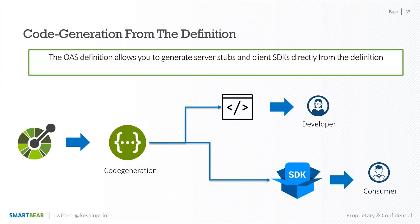And then we have the consumer. From your code generation, you can actually also generate SDKs. SDKs is a big problem — I've heard so many clients tell me how incredibly hard it is to build SDKs in so many different languages, client SDKs specifically, because there are so many different programming languages and everyone has different needs. With the Swagger CodeGen project, you can auto generate SDKs in over 40 languages, which consumers can then use. And all of this is open source, so you can go in any time and start using them.